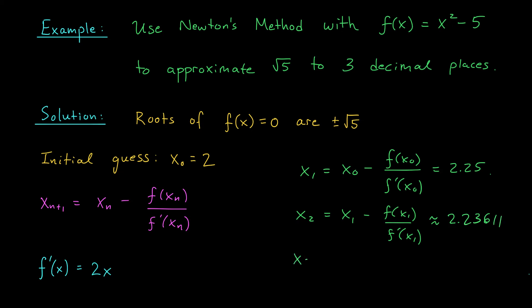Our x3 term is going to be x2 minus f of x2 over f prime of x2, which gives a value approximately equal to 2.23607. Well, check this out. From x2 to x3, our first three decimal places, 2, 3, 6, have stabilized.